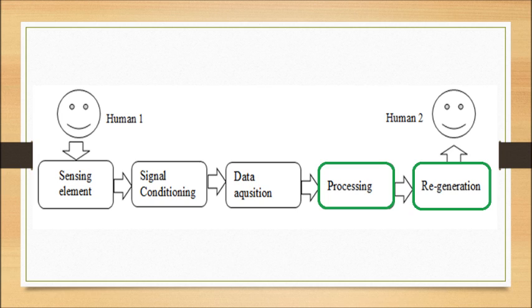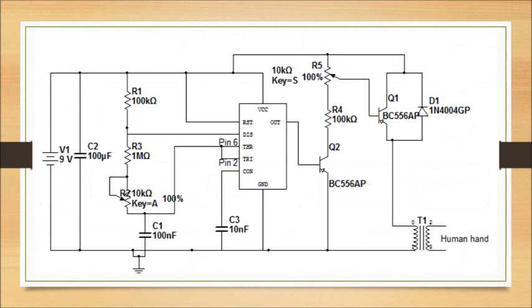The last stage is the signal regenerating stage where the electromyogram signals are generated and induced into the person. It consists of a 555 timer IC in astable multivibrator mode to generate a continuous pulse of required frequency and width.